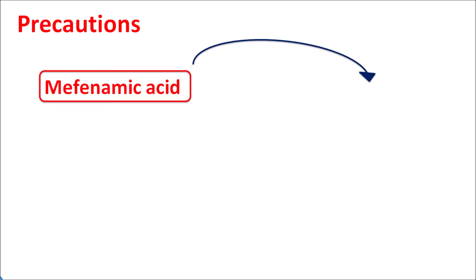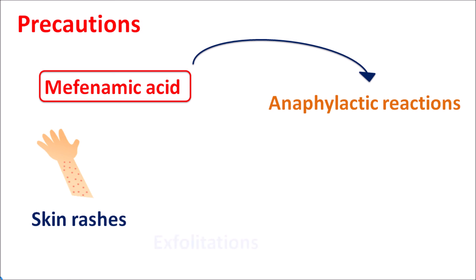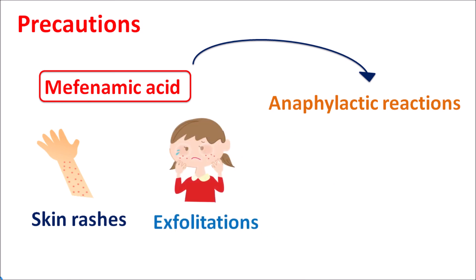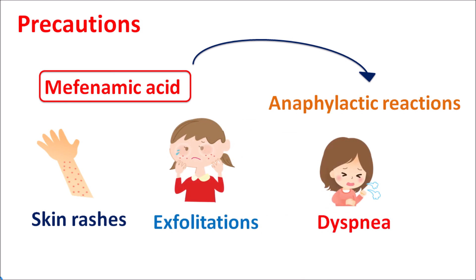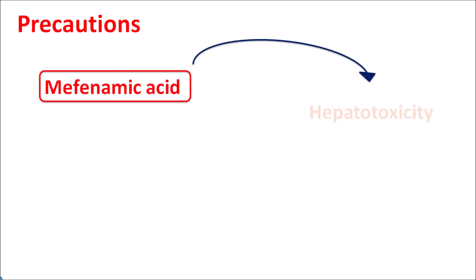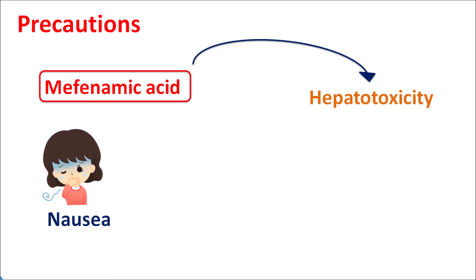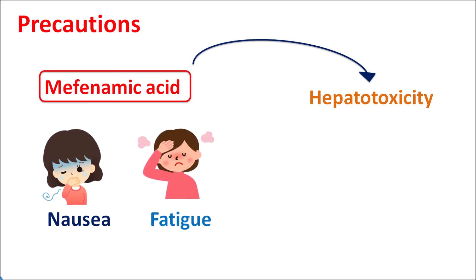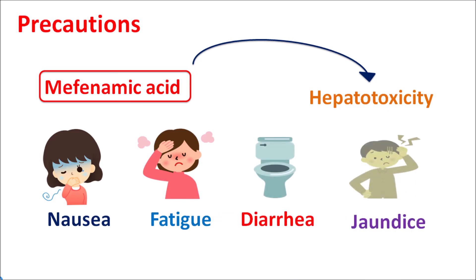Another important precaution is that mefenamic acid can produce anaphylactic reactions. It can also produce hypersensitivity resulting in skin rashes, exfoliative skin disorders, difficulty in breathing (dyspnea), and even phototoxicity. If any of these symptoms are observed, use of mefenamic acid should be immediately stopped. Similarly, mefenamic acid can increase hepatotoxicity, raise liver enzymes, and produce symptoms such as nausea, fatigue, diarrhea, and jaundice with long-term use.